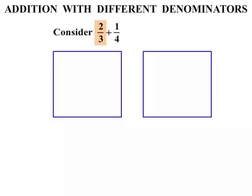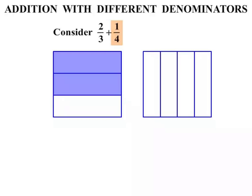For the two thirds, let's split up our first shape into thirds and shade two of them — so two thirds shaded. In a similar way, let's break this one up into fours and shade in one of them. So one quarter is shaded, and we need to add those two parts together somehow.